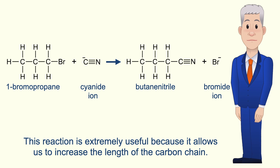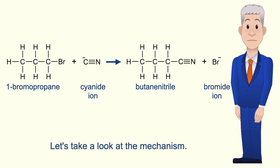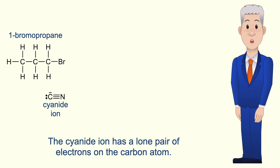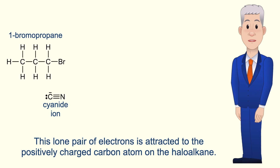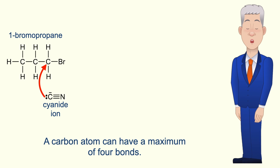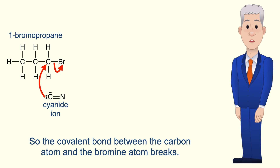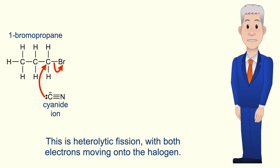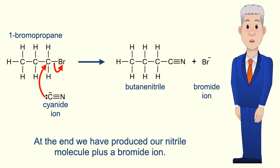This reaction is extremely useful because it allows us to increase the length of the carbon chain. Let's take a look at the mechanism. The cyanide ion has a lone pair of electrons on the carbon atom. This lone pair of electrons is attracted to the positively charged carbon atom on the haloalkane. The lone pair of electrons now forms a covalent bond. A carbon atom can have a maximum of four bonds, so the covalent bond between the carbon atom and the bromine atom breaks. This is heterolytic fission with both electrons moving on to the halogen. At the end we've produced our nitrile molecule plus a bromide ion.